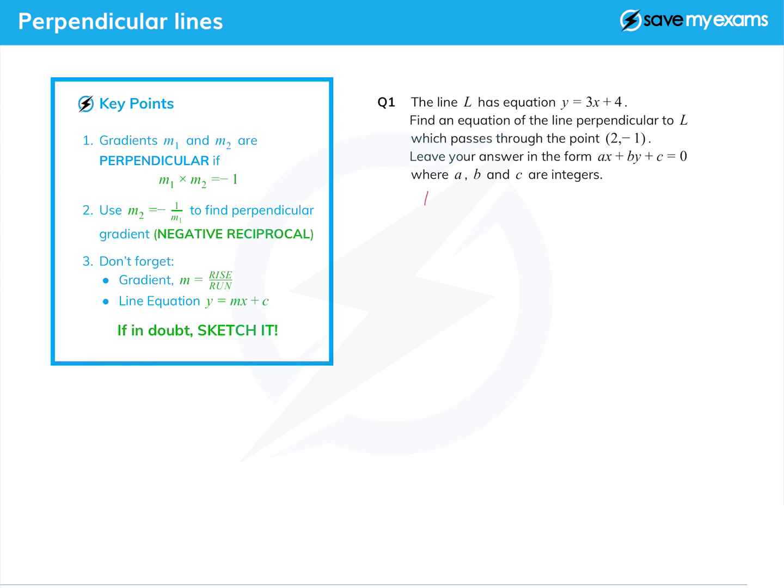We're given a point so we just need to find the gradient from the gradient of line l. The gradient of line l is 3, it's the m bit of the equation, and so for the new line...